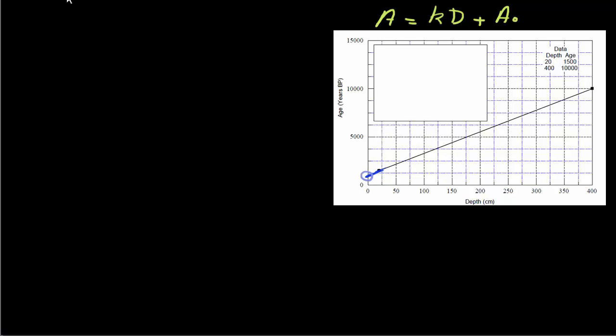So the equation that we're working with, we have A is equal to kD plus A zero. Our knowns, what do we know in this problem that we're working with?